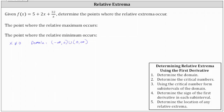Now we determine the critical numbers by finding where the first derivative is equal to zero or undefined. First, let's rewrite the function as f of x equals 5 plus 2x plus 32 times x to the power of negative 1. In this form, it will be easier to determine the derivative.